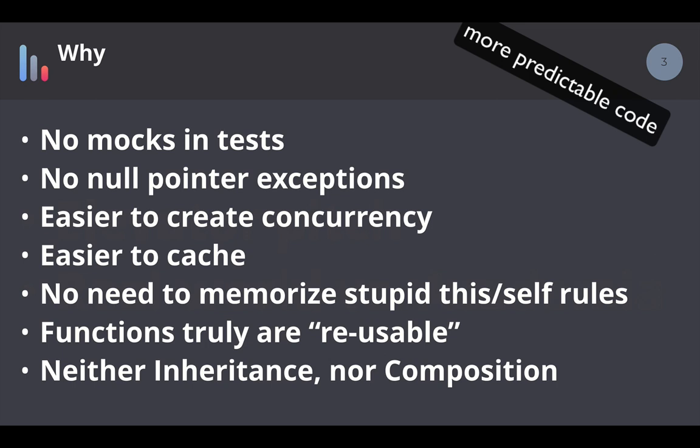You can still use the stack traces and errors you get, but you don't actually have your program crash, which is nice. Easier to create concurrency — if you have a bunch of pure functions that can be run concurrently because they don't have any global state, it's really easy to run one or 500, it doesn't matter. Because it's the same input, same output, code is a lot easier to cache. You can guarantee that if you get the same inputs, there's no reason to run the code again — just give the same output. And there's no need, especially in JavaScript and Python, to memorize this or self rules, the prototype, the class, bind, and all that junk.